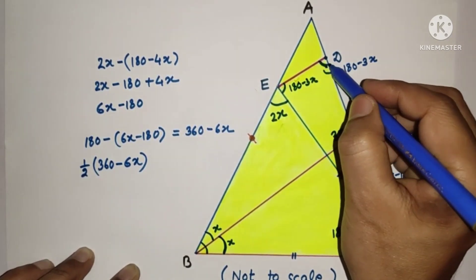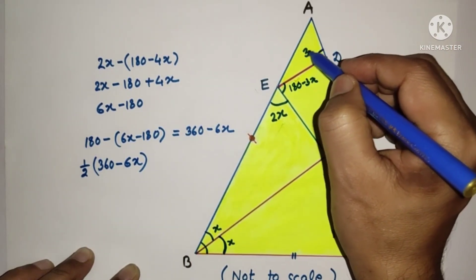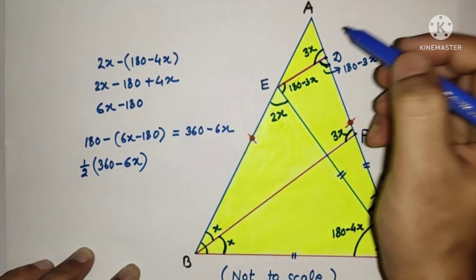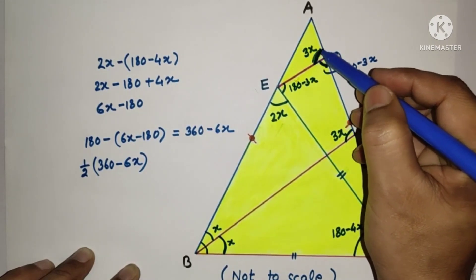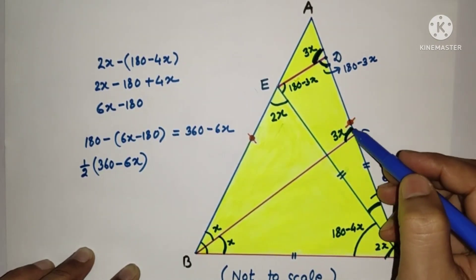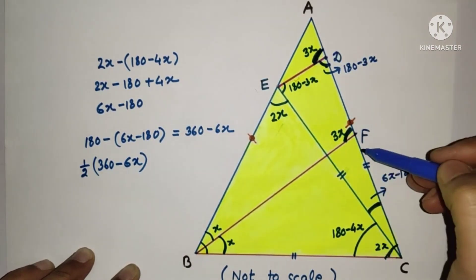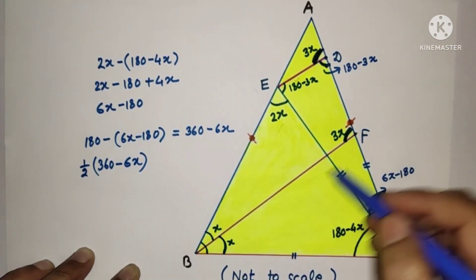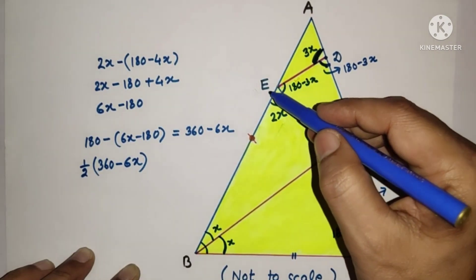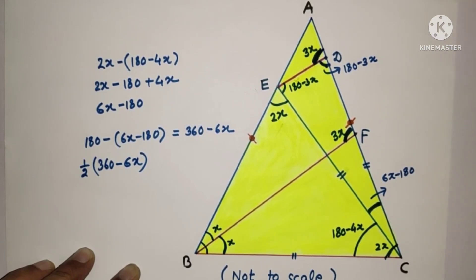Since angle CDE is 180 minus 3x, and it forms a linear pair, the supplementary angle EDA is 3x. Now, angle BFD is also 3x and angle EDA is 3x. These are corresponding angles and both are equal, therefore BF is parallel to ED. Hence proved — first method complete.